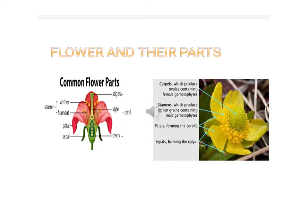Sepals are the green leaf-like parts in the outermost circle of a flower. They protect the flower during the bud stage. The second part is the petals, which are brightly colored due to the presence of colored pigments. They attract insects, which helps in pollination.